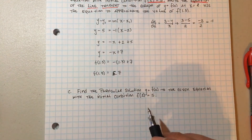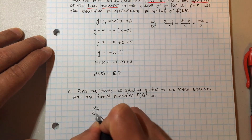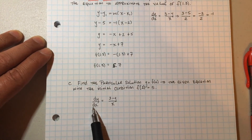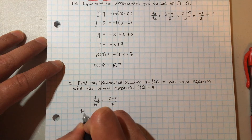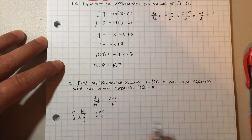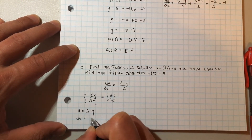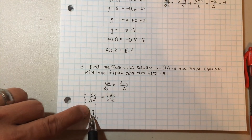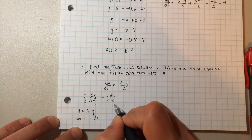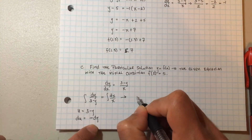Last part: find the particular solution y = f(x) given the initial condition. We separate variables from dy/dx = (3 - y)/x, keeping y's with y's: dy/(3 - y) = dx/x. Take the antiderivative, and be careful. Use u-substitution: let u = 3 - y, so du = -dy. The right side, dx/x, gives ln(x).